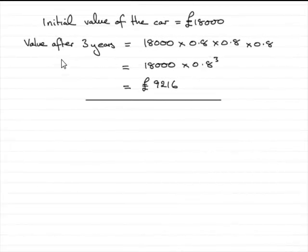In the first part of the question, we found that the value after three years was £9,216. In this part of the question, we're asked to find the number of years it takes before the value falls below £1,000.